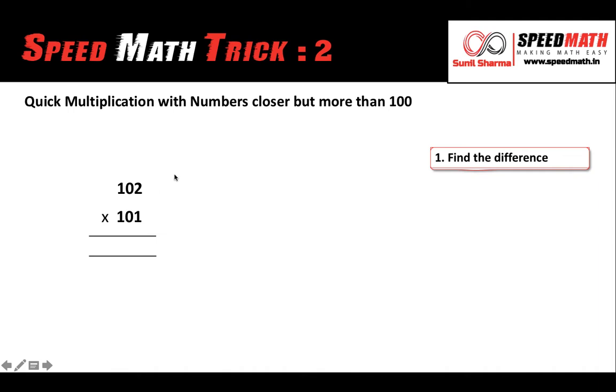So what I'm going to do is I'm going to draw a circle next to 102 and a circle next to 101, and in that circle I'm going to write the difference of each number with 100. So let's begin. 102 is 2 more than 100, so in the circle I'm going to write plus 2. Remember, I'm writing plus because both the numbers are more than 100. Similarly, 101, the difference would be plus 1, so let me write plus 1 in the circle. This is the first step.